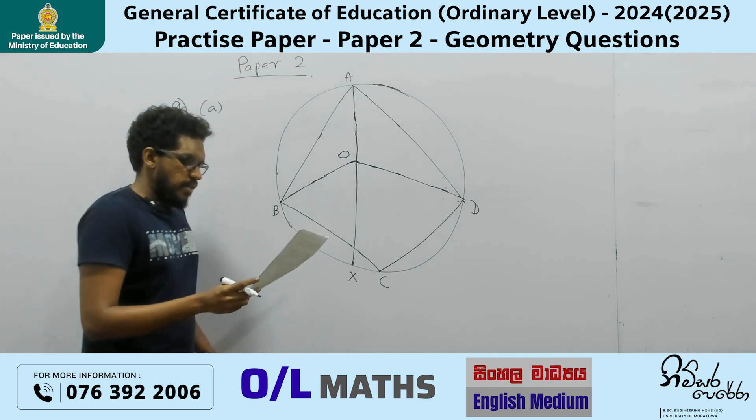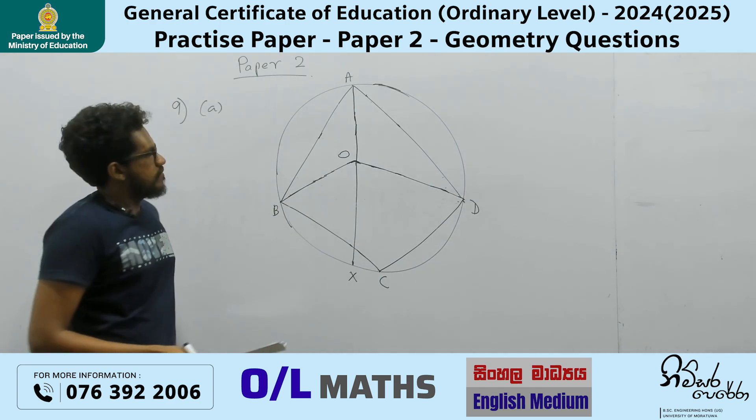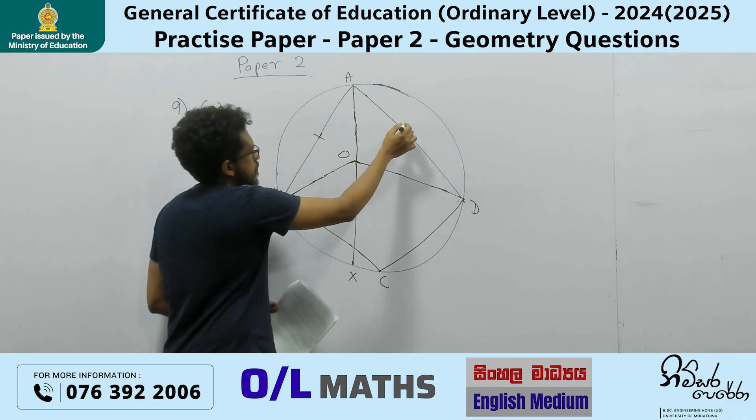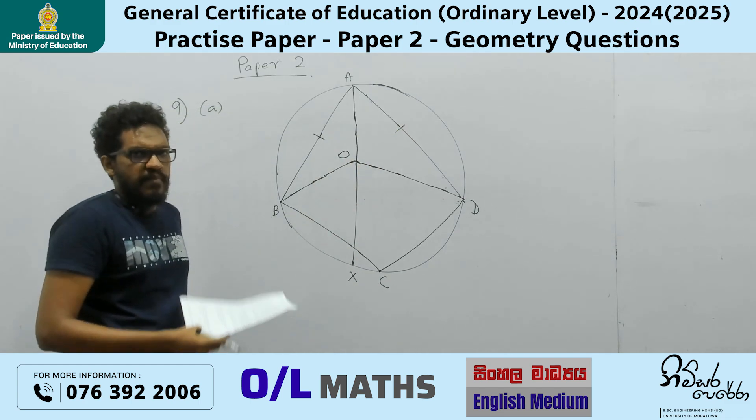They have given that AB equals AD. AB equals AD.